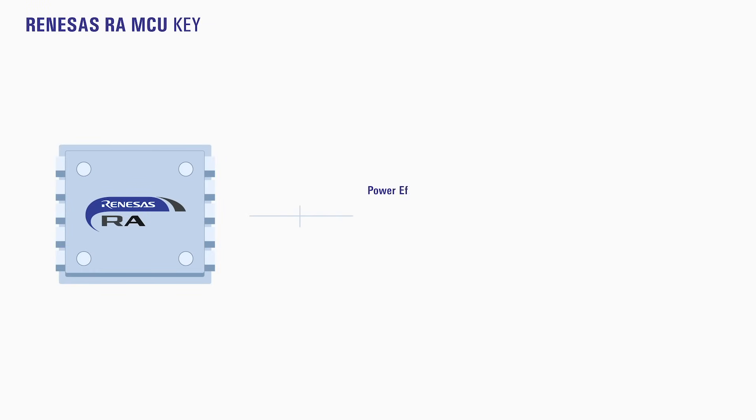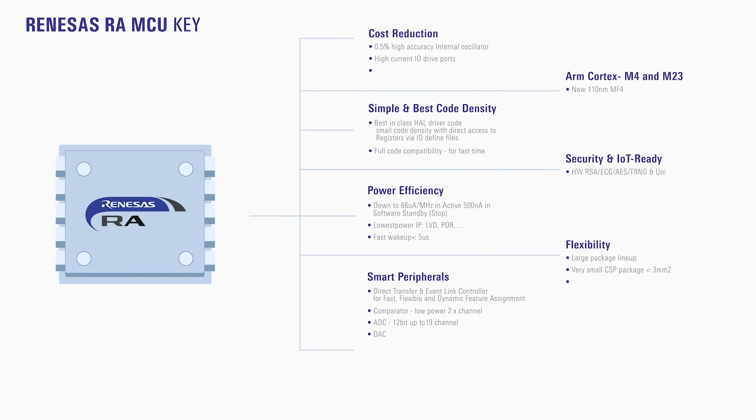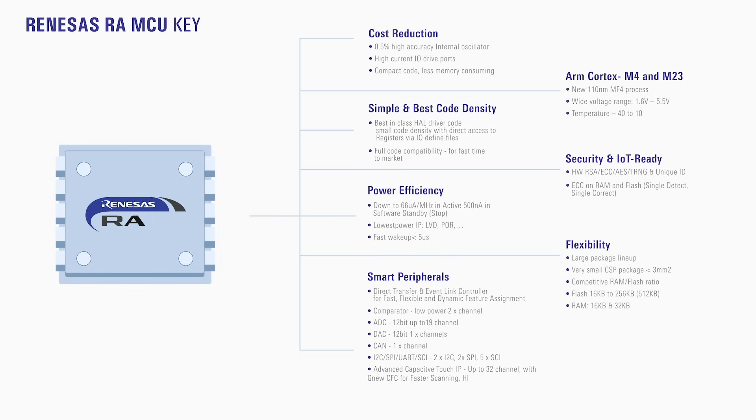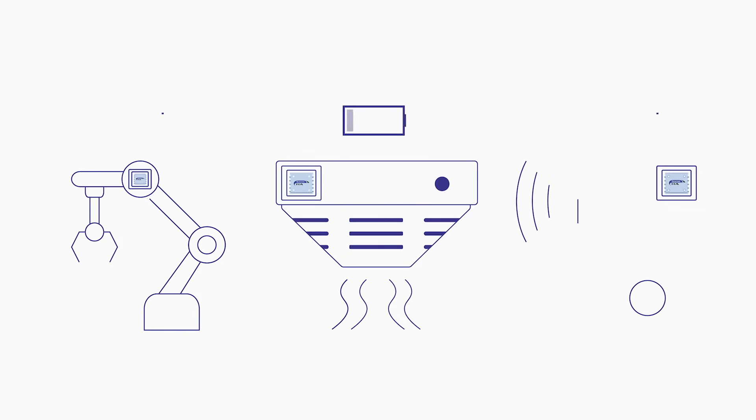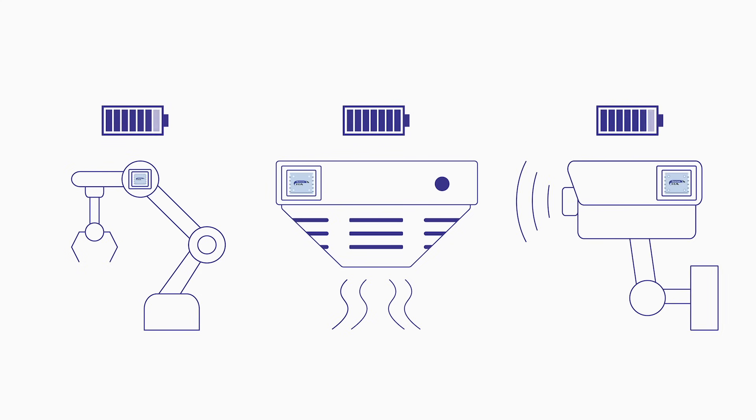MCU features like 0.5% high accuracy internal oscillators, data flash memory, and high current IO drive ports help simplify designs while also reducing bill of material cost. And fast 2 microsecond boot up time means your device is consuming less power over time, enabling much longer battery life.